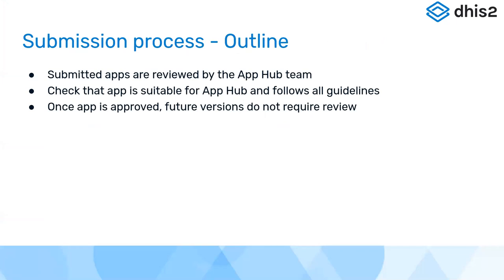On the submission process: once you submit an app to the App Hub team, it will first be pending — meaning only you can see it — and then the App Hub team will review it within a week or two. All we do is check whether the app is suitable and that you follow all guidelines. Once an app is approved, future versions do not require review, so don't worry if you need to get a bug fix out quickly. And being rejected isn't a big deal — it just means we have some feedback to incorporate, and we'll approve you as soon as that's dealt with.